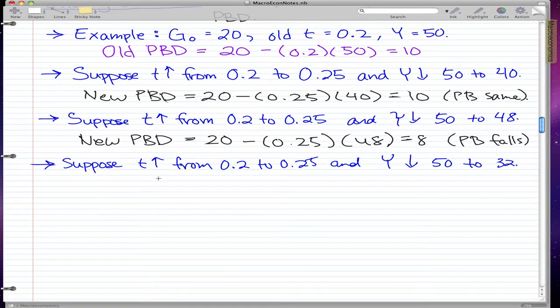Lastly, suppose that we have this same increase in tax rate, and our Y fell from 50 to 32. So the new PBD is equal to 20 minus 0.25 times 32, and that equals 12. And in this case,